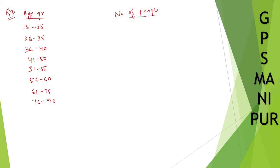The number of people for each age group is: 25, 30, 27, 18, 47, 20, 6, and 2.